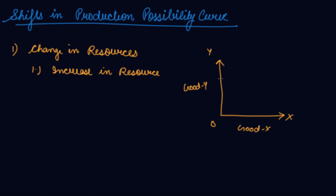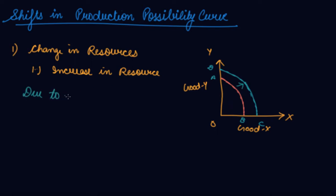This was the initial production possibility curve. With the increase in resources, there will be a parallel shift of the production possibility curve upwards. Your initial production possibility curve was AB; now it has shifted because your resources have increased.